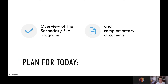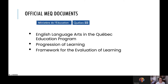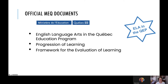Today we're going to begin by going over some of the highlights of three important ministry documents. We'll start by looking at the English Language Arts section of the Quebec Education Program, which is our curriculum, and two complementary documents that support the QEP: the Progression of Learning and the Framework for the Evaluation of Learning. You may often hear people talk about ELA in the QEP, or the POL for the Progression of Learning, and as yet there's no abbreviation for the Framework for the Evaluation of Learning.